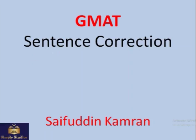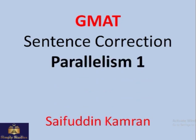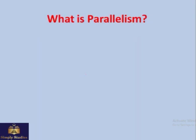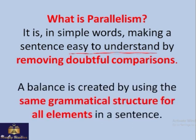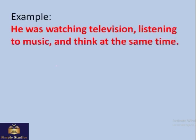In GMAT sentence correction, one of the most common things tested is parallelism. The main objective of parallelism is to make a sentence easy to understand. There should be no doubtful comparisons, and there should be a balance in the grammatical structures used. That balance is created by using the same grammatical structure for all elements.